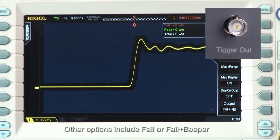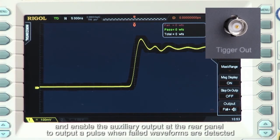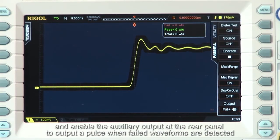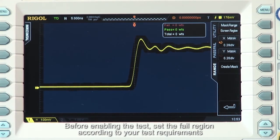Other options include fail or fail plus beeper and enable the auxiliary outputs on the rear panel to output a pulse when failed waveforms are detected. Before enabling the test, set the fail region according to your test requirements.